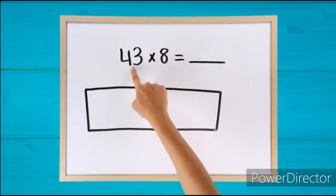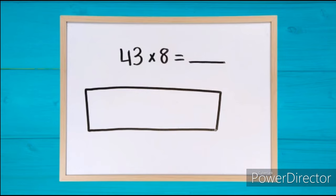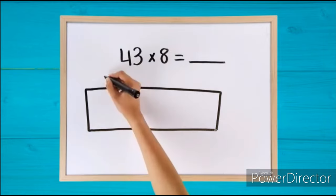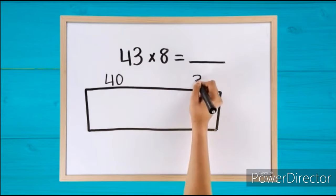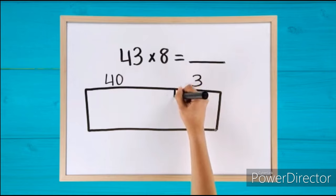For this equation, it is 43. Decompose 43 into tens and ones in the rectangle. The number 43 has four tens and three ones. Split the rectangle into two parts to show the different place values.